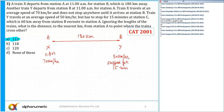Both trains started at exactly 11 a.m. — that is given to us. However, train Y stopped for 15 minutes. Let's say they are meeting after T hours.